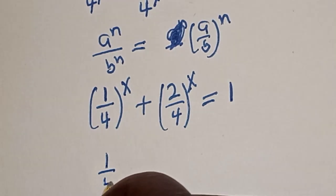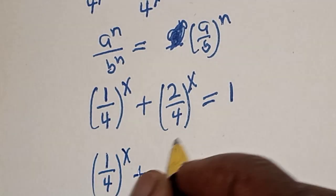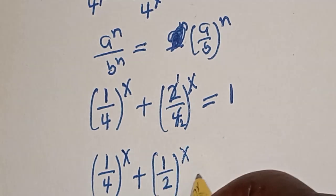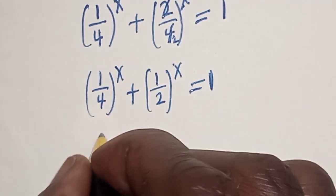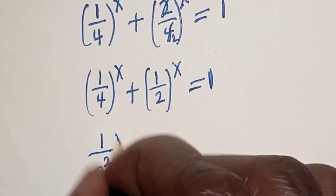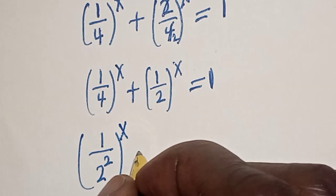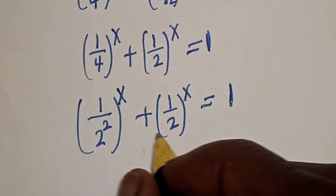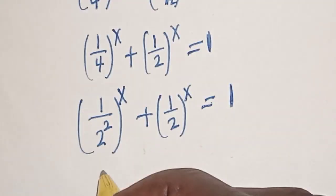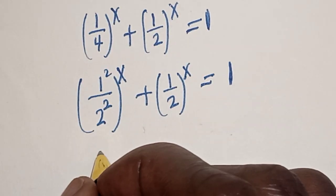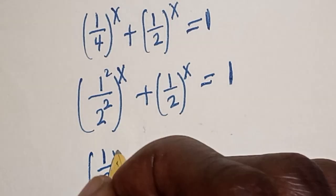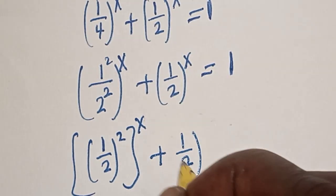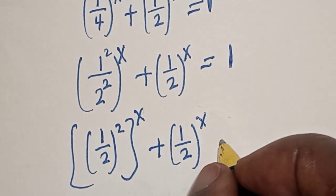Now, 1 over 4 raised to the power s can be written as 1 over 2 squared raised to the power s, and 2 over 4 raised to the power s becomes 1 over 2 raised to the power s. Note that 1 is also 1 squared and 4 is 2 squared.